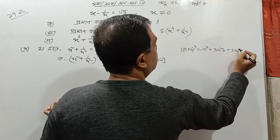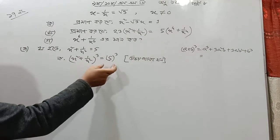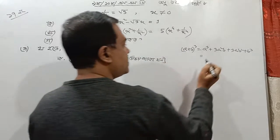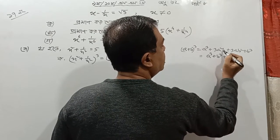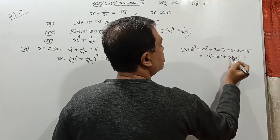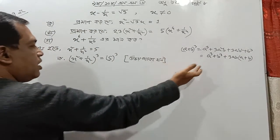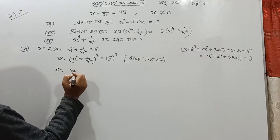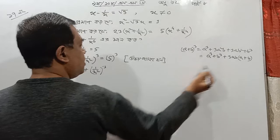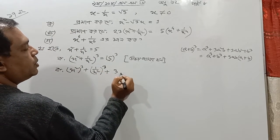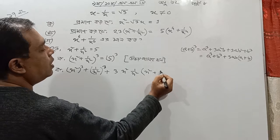3a squared b plus 3ab squared plus b cube. This is really good and it is true. When you have to find the value, you can use this pattern. This is a cube and b cube — a cube plus b cube, plus 3ab squared. If you have a plus b cube, then you have a cube plus b cube.